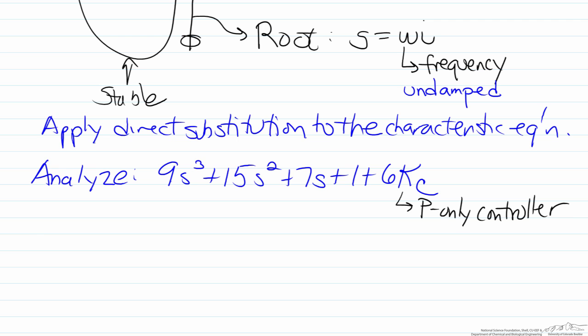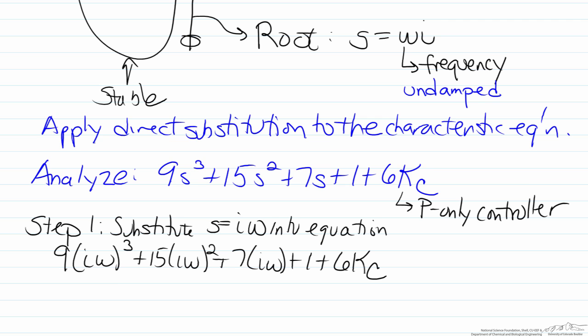So in order to use this method what we're going to do for step one is we're going to substitute s equals i omega into the characteristic equation. And again this is a characteristic equation we set this equal to zero. We have to remember that i squared, this is the imaginary value i, equals negative one.